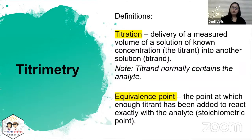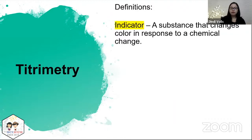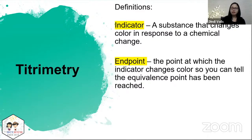Another term is equivalence point — the point where enough titrant has been added to your analyte. It's also sometimes called the stoichiometric point. Physically, it can be difficult to see when the equivalence point has been reached, so most of the time we use an indicator: a substance that changes color in response to a chemical change. When the indicator changes color, you have reached the endpoint, and ideally the endpoint should coincide with the equivalence point.